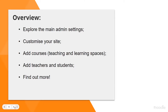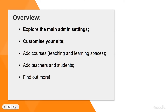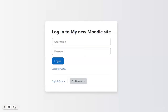We're going to explore the main admin settings you need, including how you can customise your site — make it more colourful, add images, brand it. Then we'll look at how you can add what Moodle calls courses, the teaching and learning spaces. Once we've got our courses set up, we'll look at how you can add your teachers and students. And then I'll give you a few quick tips as to where you can go to find out more, because we cannot do everything in a short one-hour webinar.